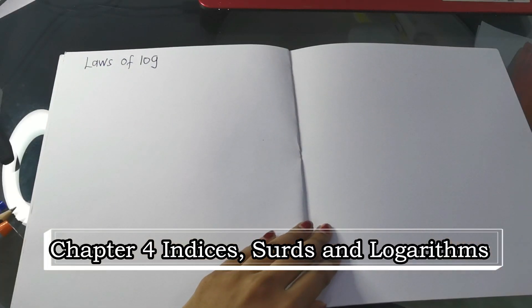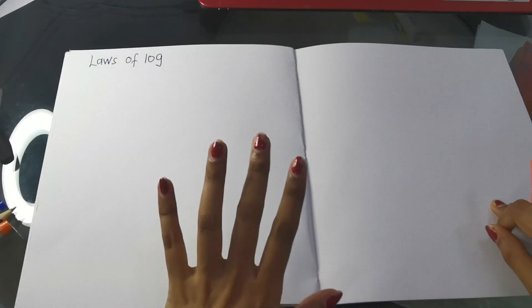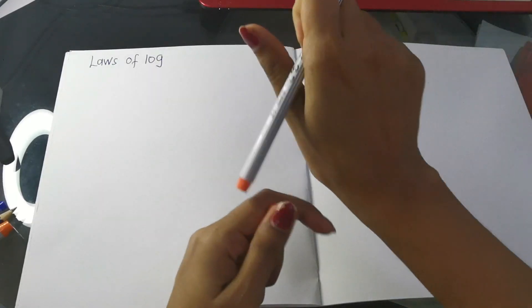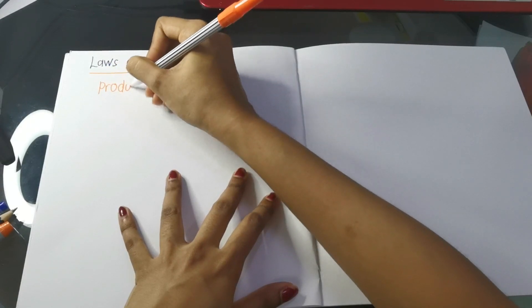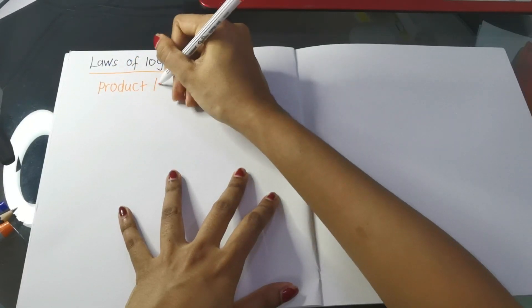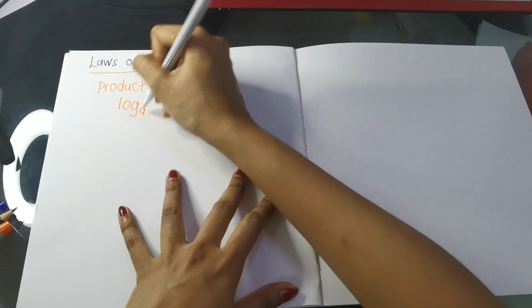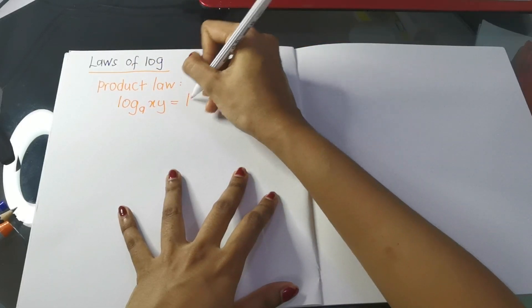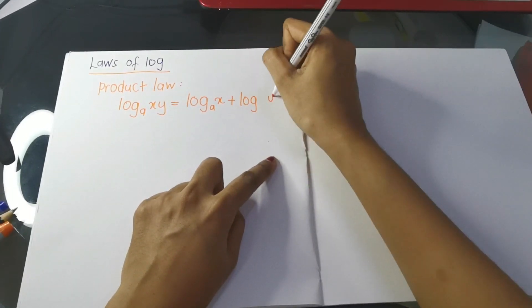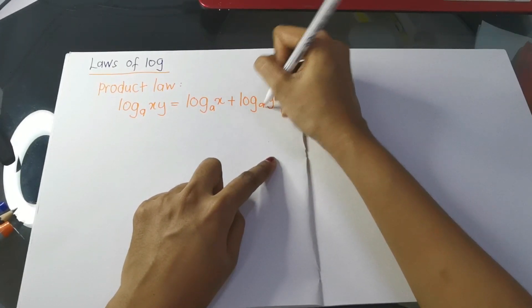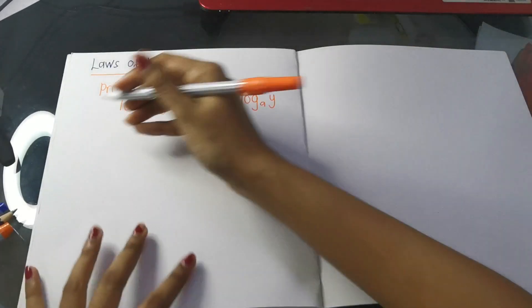Today in Part 2 of logarithms, I'm going to teach you how to prove the laws of log. We only have three laws to know. The first is the product law — product means multiply. So log(xy) to the base a equals log x base a plus log y base a. The product becomes a plus when we separate them.